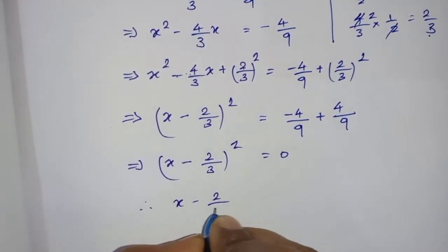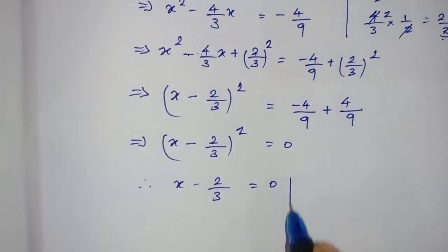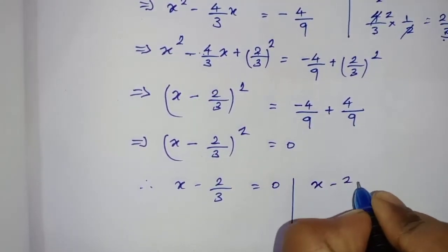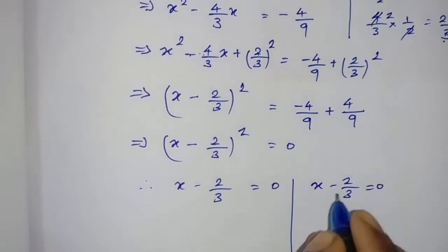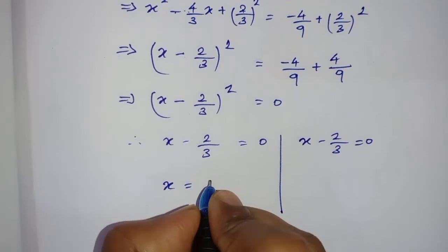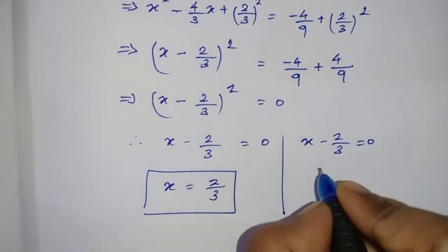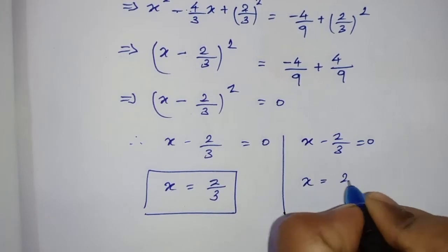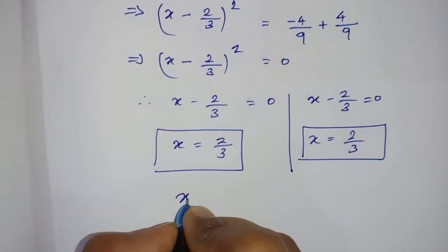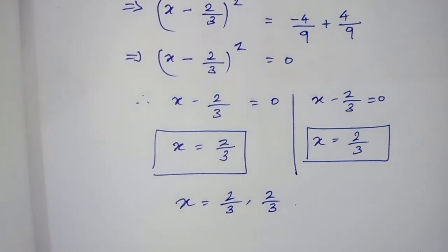Therefore x minus 2/3 equals zero. Since it is a perfect square, this gives a repeated root — x minus 2/3 equals zero twice. So x is equal to 2/3. Therefore x equals 2/3 and 2/3. This is the answer for the first sum.